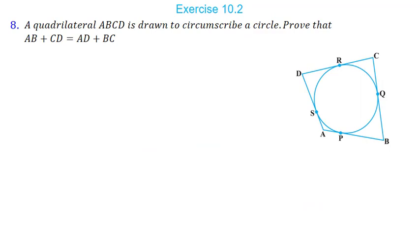Let us see the eighth question. A quadrilateral ABCD is drawn to circumscribe a circle. Prove that AB + CD = AD + BC. In the diagram, ABCD circumscribes a circle — meaning the circle is inside and all four sides of the quadrilateral touch the circle. P, Q, R, S are the four points of contact on sides AB, BC, CD, and AD respectively.